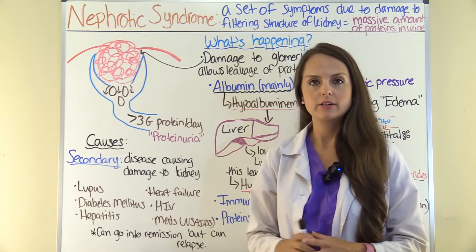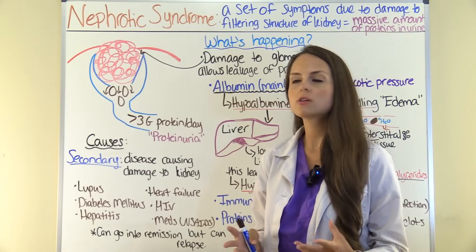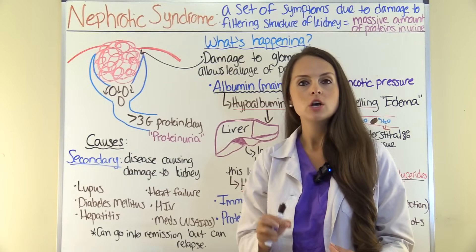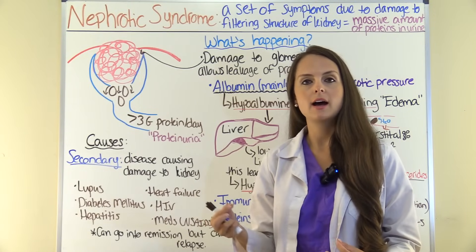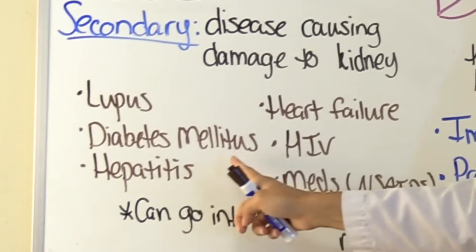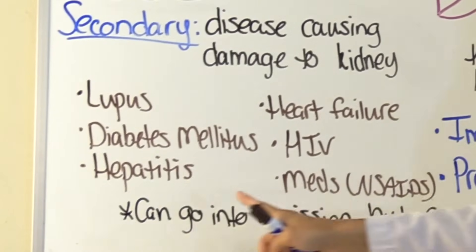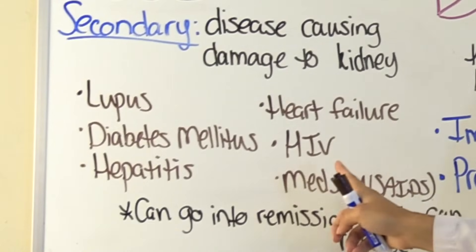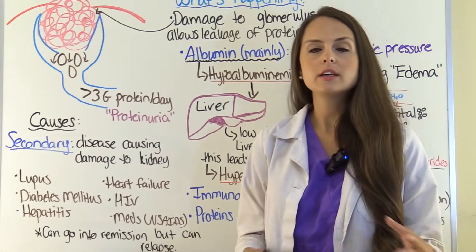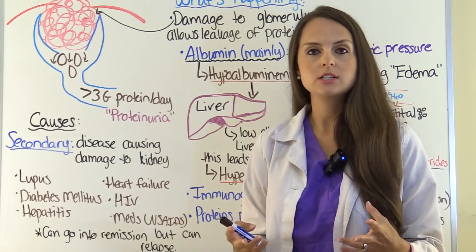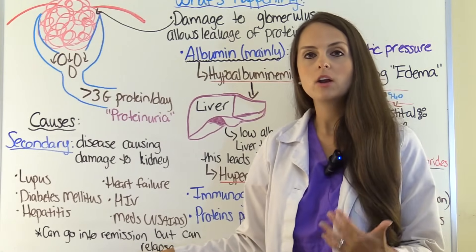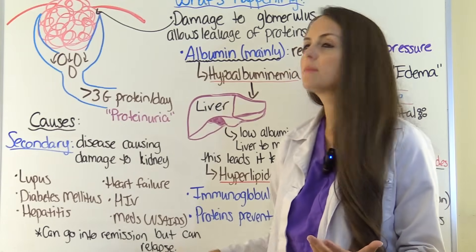Secondary causes are where a disease causes damage to the kidney's glomeruli. These include lupus, diabetes mellitus, hepatitis, heart failure, HIV, or medications like NSAIDs. One important thing to remember is that the patient can go into remission, but they can also relapse.